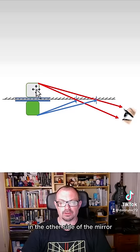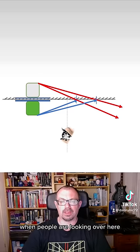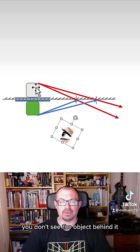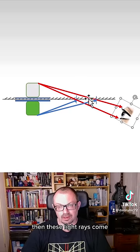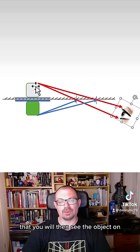When people are looking over here, you only see the object and the paper - you don't see the object behind it. But once you bring your eye close to the mirror, then these light rays come off at such a tight angle that you will then see the object on the other side of the piece of paper.